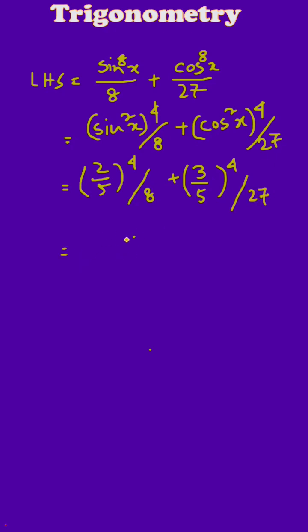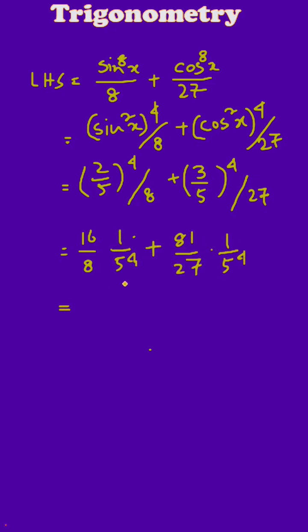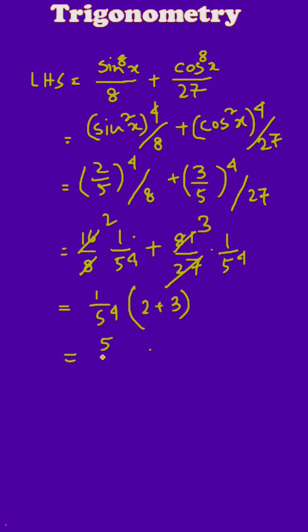Now calculate this and you will have — taking (1/5)⁴ as common — you get 2 + 3, which equals 5/5⁴, that is 1/125.